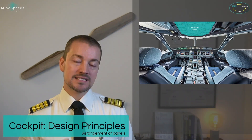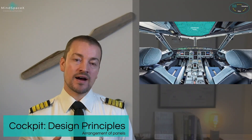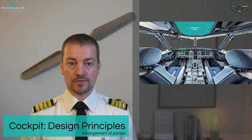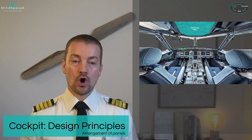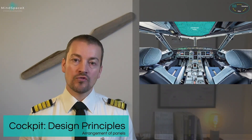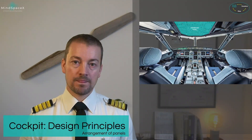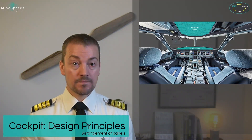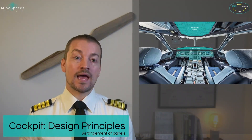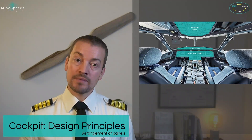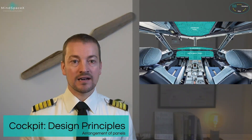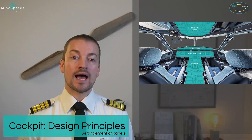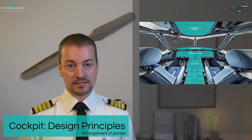The cockpit itself is divided into four zones: overhead is the overhead panel, then we have the glare shield, then we have the instrument panel, and finally, between the two pilots, we have the pedestal.